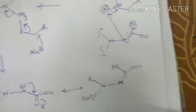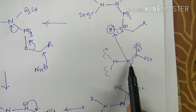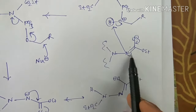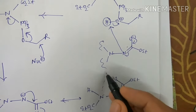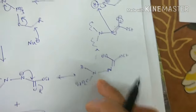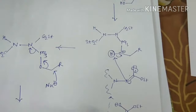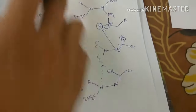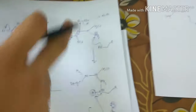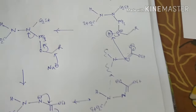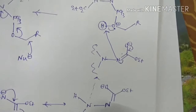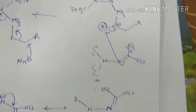Now what will be the fate of this anion? As we are showing here, this proton deprotonation step can be done by this molecule — it may be this molecule, or this molecule, or this molecule — and any of these can also do this deprotonation. When the reaction starts, which negatively charged species is doing which deprotonation, we can't say. All the negatively charged species can do that.